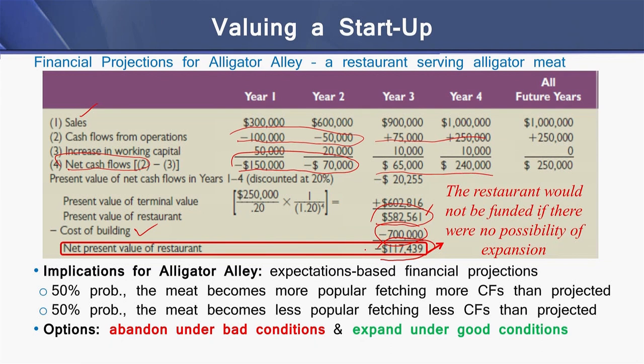This means the restaurant would not be funded with further capital if there were no possibility of expansion by the owner. However, we can see that there are options that can be embedded in this project. These options are of two types: the project can be abandoned under bad conditions, or the project can be expanded under good conditions.